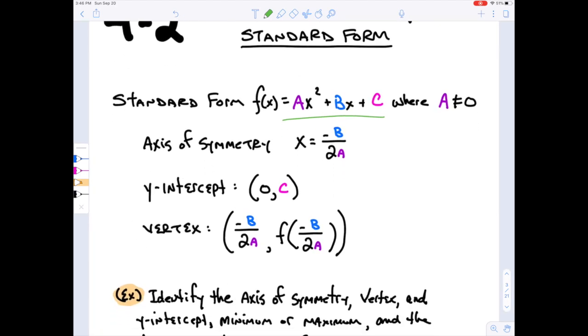First off, the axis of symmetry, which is the line that goes right down the middle of your parabola. If this is your parabola and here's your vertex, then the axis of symmetry goes right down the middle. It's the way to identify the left and right sides of your parabola.